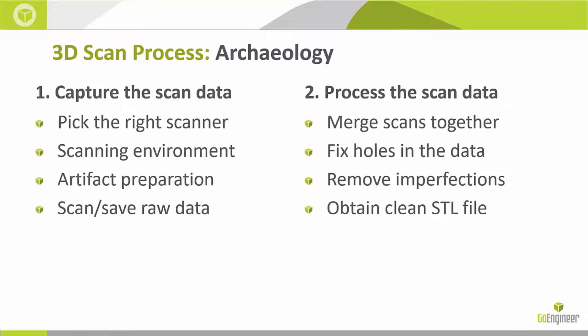Once you have the right scanner, you have to prepare the part. This may involve placing target stickers on or around the part. If it's very reflective, you may have to spray some light powder on it. And if it needs to be positioned a certain way, you may have to fixture the part. Finally, you can scan the part and save the raw data. The next step is to process the scanned data — this involves merging scans together if you have multiple scans, fixing holes in the data, removing imperfections using smoothing tools in the software, and finally obtaining a nice clean STL file.